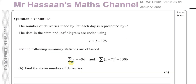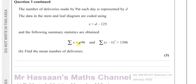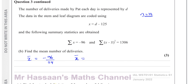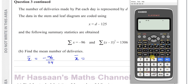Now moving on to part B. The number of deliveries made by Pat each day is represented by D. The data in the stem and leaf diagram are coded using X equals D minus 125, and the following summary statistics are obtained: the sum of X values is negative 96, and the sum of squared deviations is 1306. The coded mean X-bar equals negative 96 divided by 24, which gives minus 4.